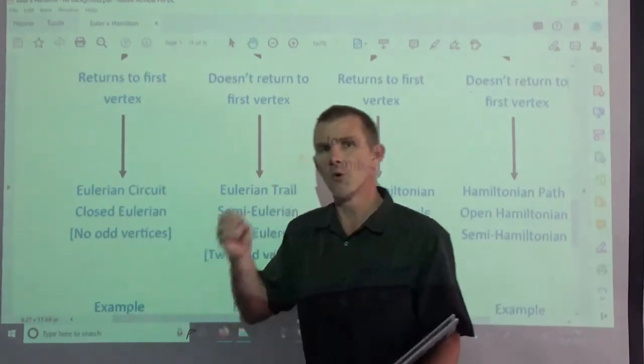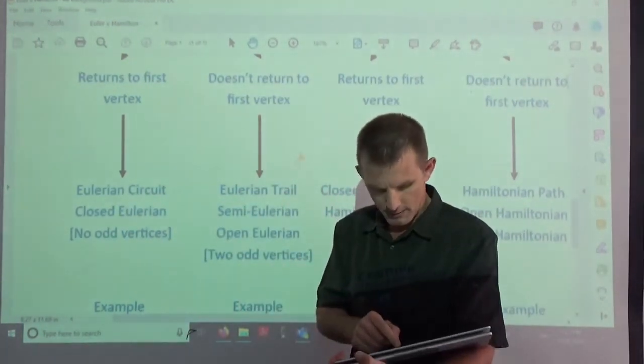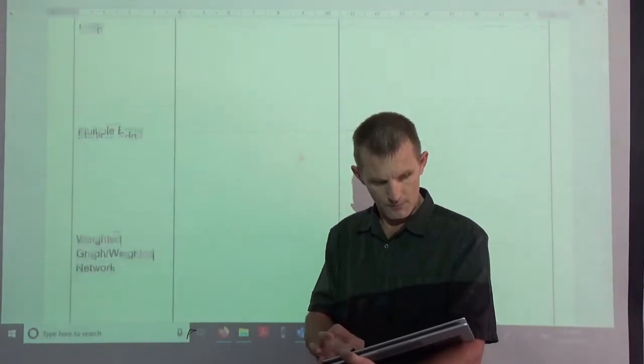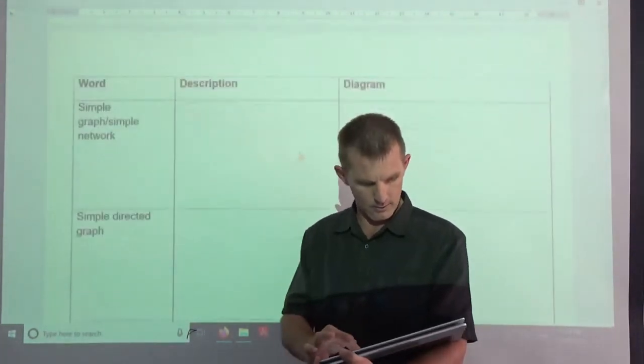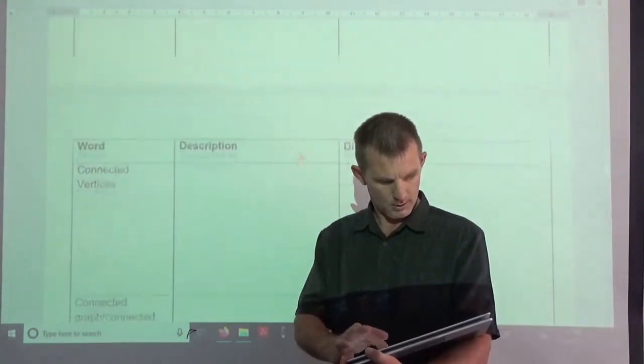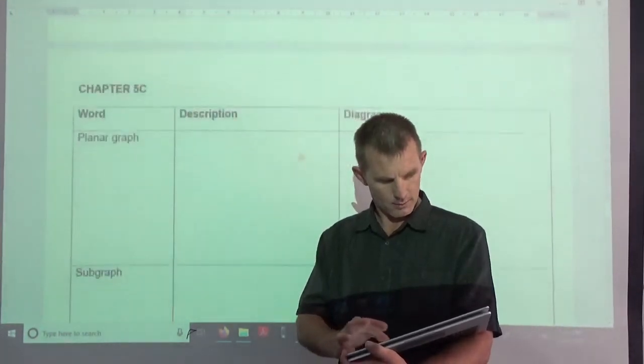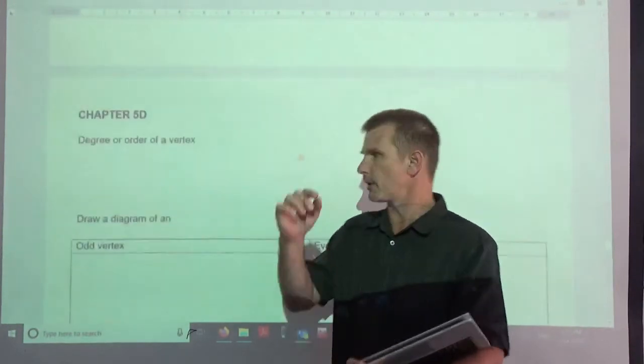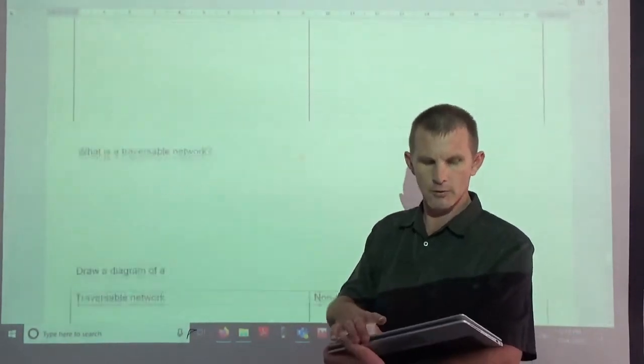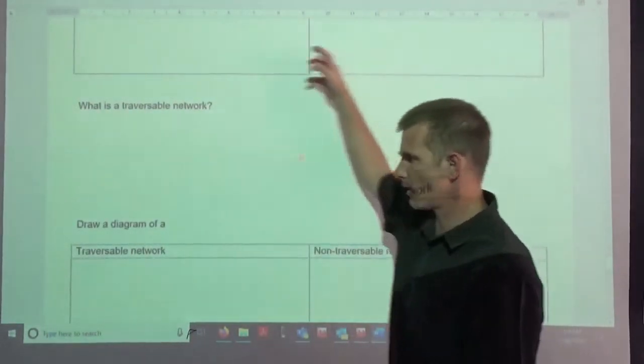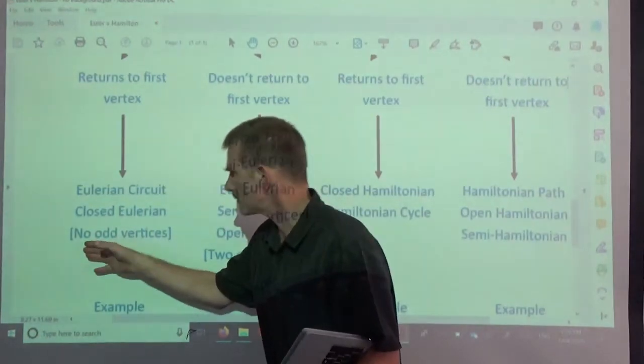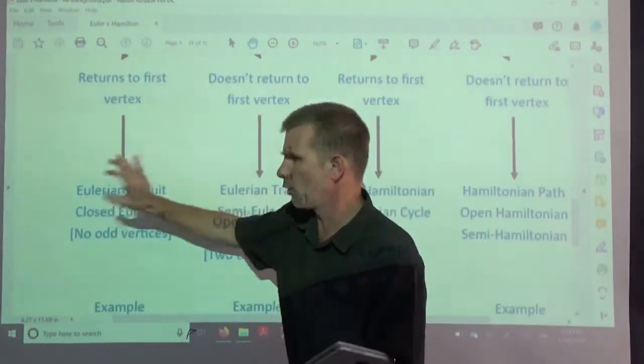Here's the key: no odd numbered vertices. So every vertex would be an even numbered vertex. This comes into Euler's rule. The degree of a vertex, odd vertex, even, traversability - this stuff will help you to understand this. No odd vertices, you must be an Eulerian circuit or a closed Euler.